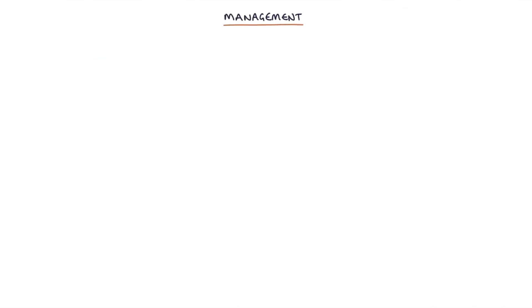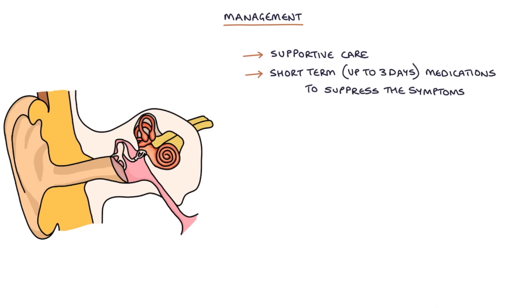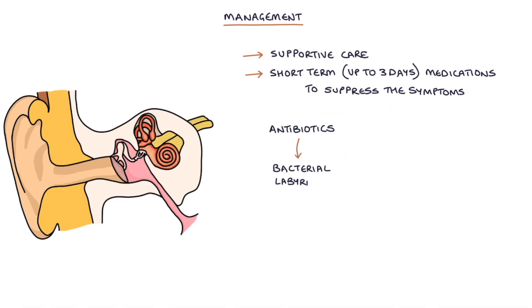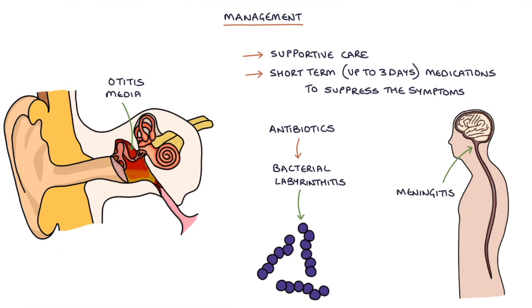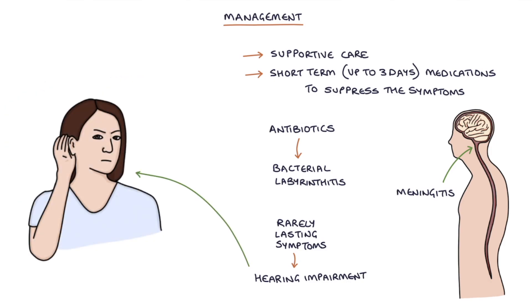Management of labyrinthitis is the same as with vestibular neuronitis, with supportive care and short-term use of up to three days of medication to suppress the symptoms. The options for managing symptoms are prochlorperazine or antihistamines, for example cyclizine, cinnarizine, and promethazine. Antibiotics are used to treat bacterial labyrinthitis and will have no effect on viral causes. If there's a bacterial cause, the underlying infection — for example otitis media or meningitis — needs appropriate treatment. Patients rarely have lasting symptoms, but these may include permanent hearing impairment, which is more common after bacterial labyrinthitis, particularly associated with meningitis.